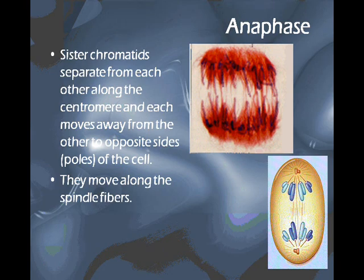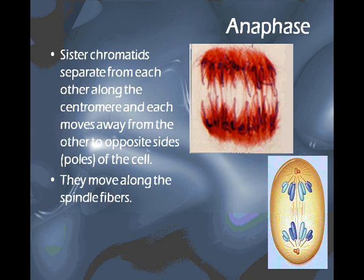After metaphase comes anaphase, and that is where the sister chromatids separate from each other along the centromere and they move to opposite poles of the cell. Now that the sister chromatids are no longer attached, they are each their own individual chromosome, and they are pulled along the spindle fibers until they reach the poles of the cell.